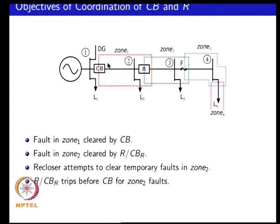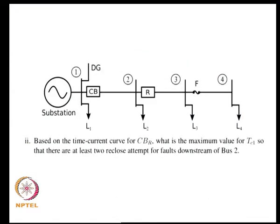If there is a permanent fault in zone 2, one has to ensure that the recloser locks out before the upstream circuit breaker trips. That is the overall objective for this coordination problem. Based on the time current curves for the underlying circuit breaker of the recloser and for the upstream breaker, we find the timings required for the recloser.